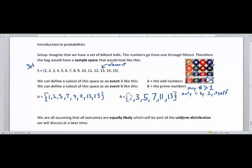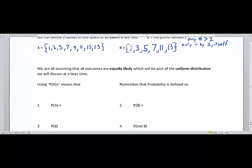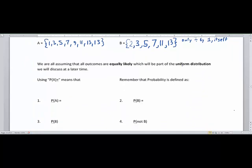So let's assume that all outcomes, like picking one of these, is equally likely, and they're part of the uniform distribution we're going to talk about in chapter 5. So let's get used to the probability notation. This P(X), if someone says this aloud, it would be P of X, but this is really asking the probability of getting event X. And probability is defined as what you desire or want divided by the number of possibilities.